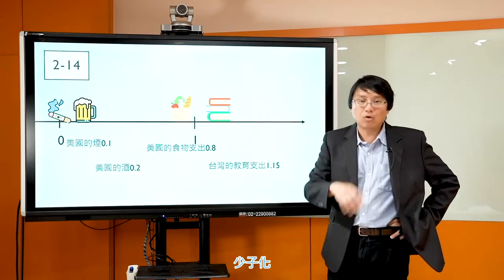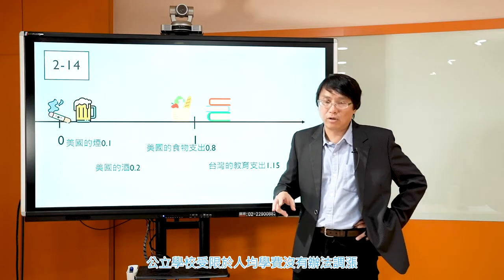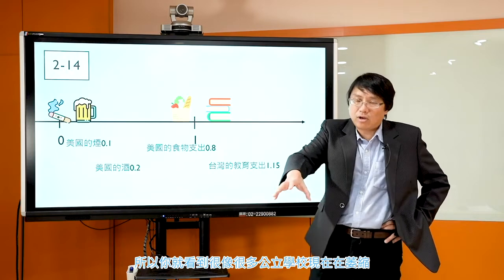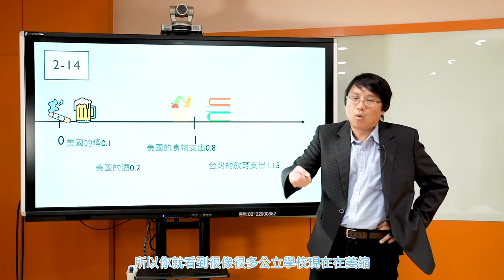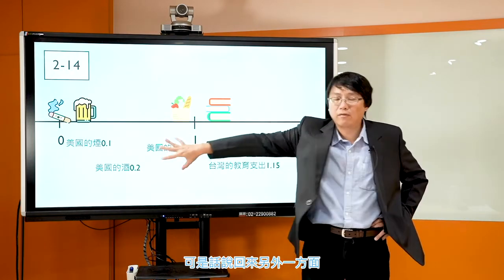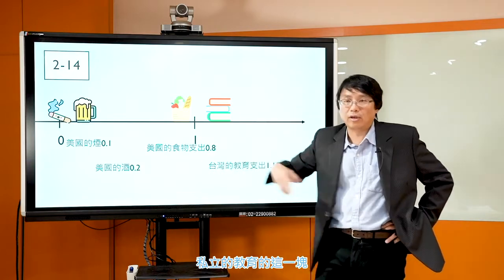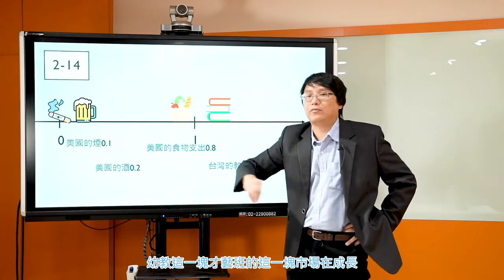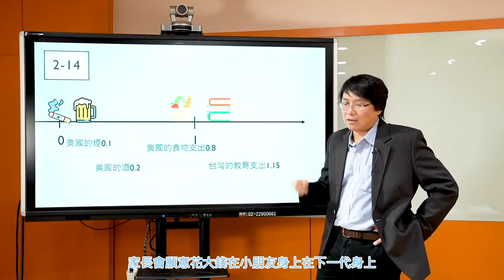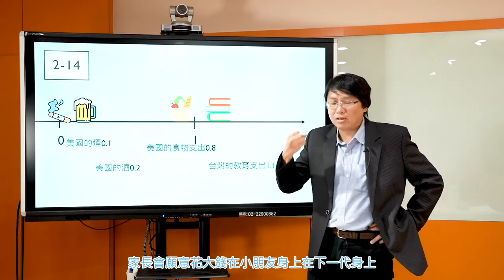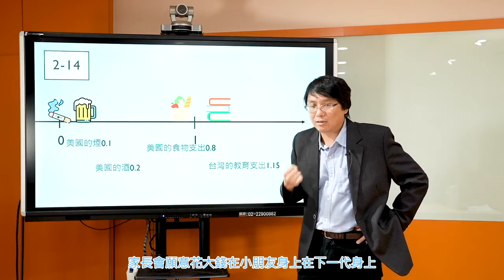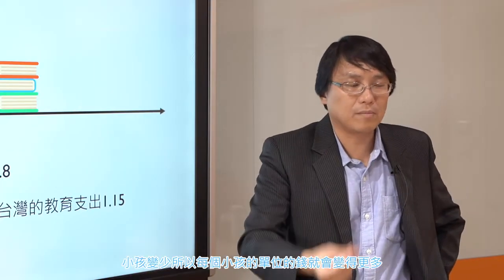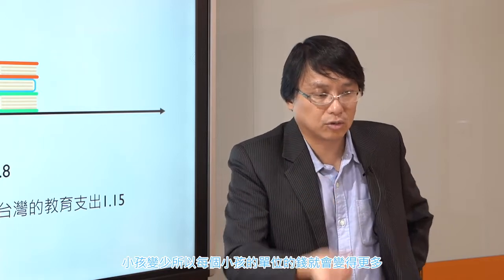这个数字跟你讲确实是有市场，市场方向往贵族教育这条路走。所以如果你要做教育这一行，经济学给你一些市场洞见——教育市场规模会变大，人均小朋友支出会增加。少子化所以小孩变少，但人均支出在成长，所以很多私立学校走贵族教育、学费收得非常贵还是有市场；而公立学校受限于学费无法调涨，现在在萎缩，私立教育、幼教、才艺班市场在大量成长。